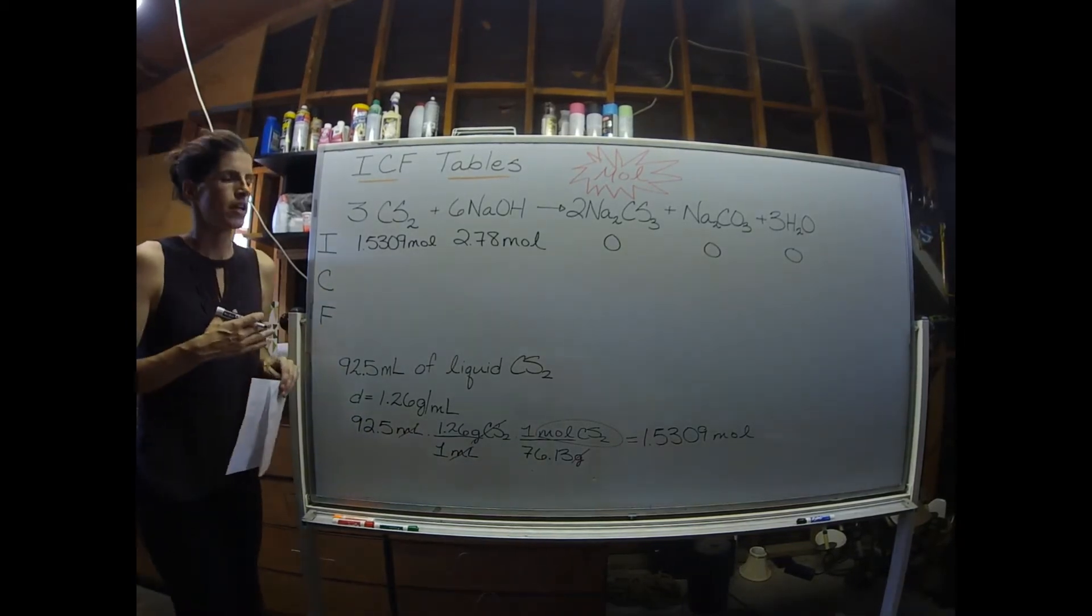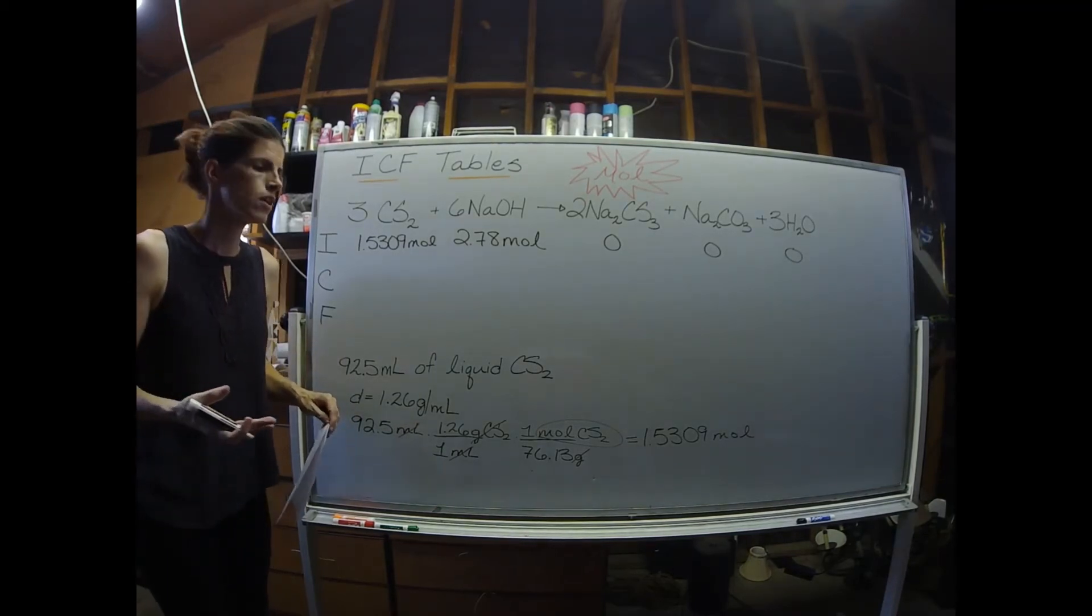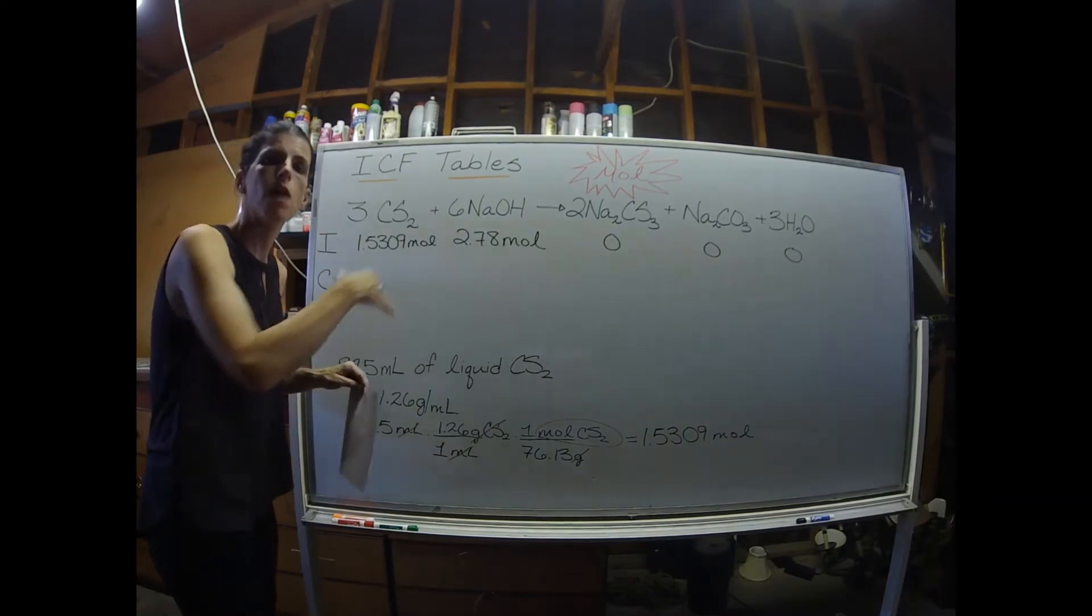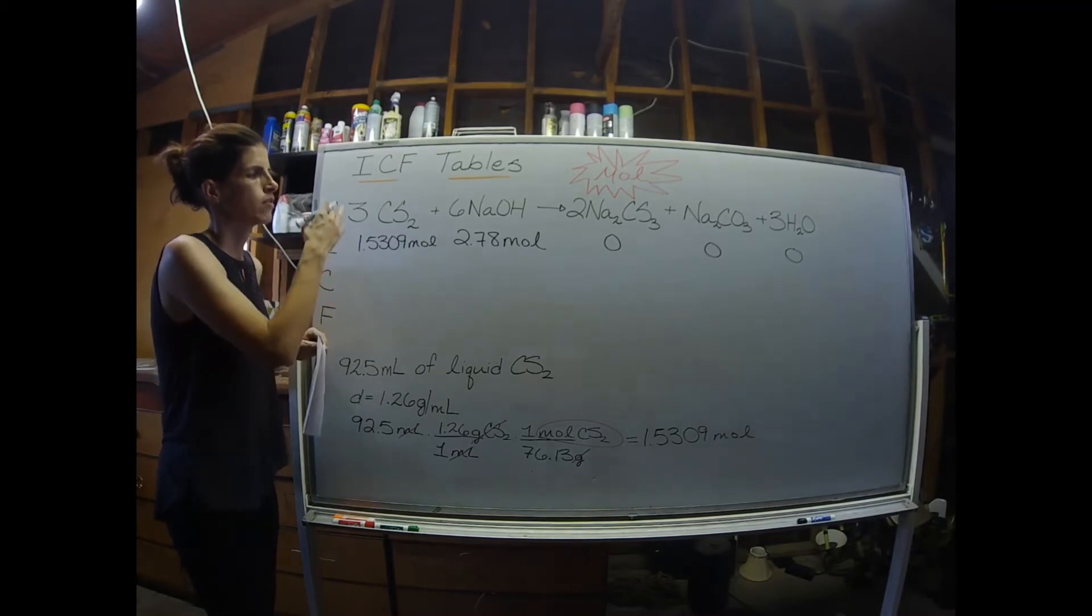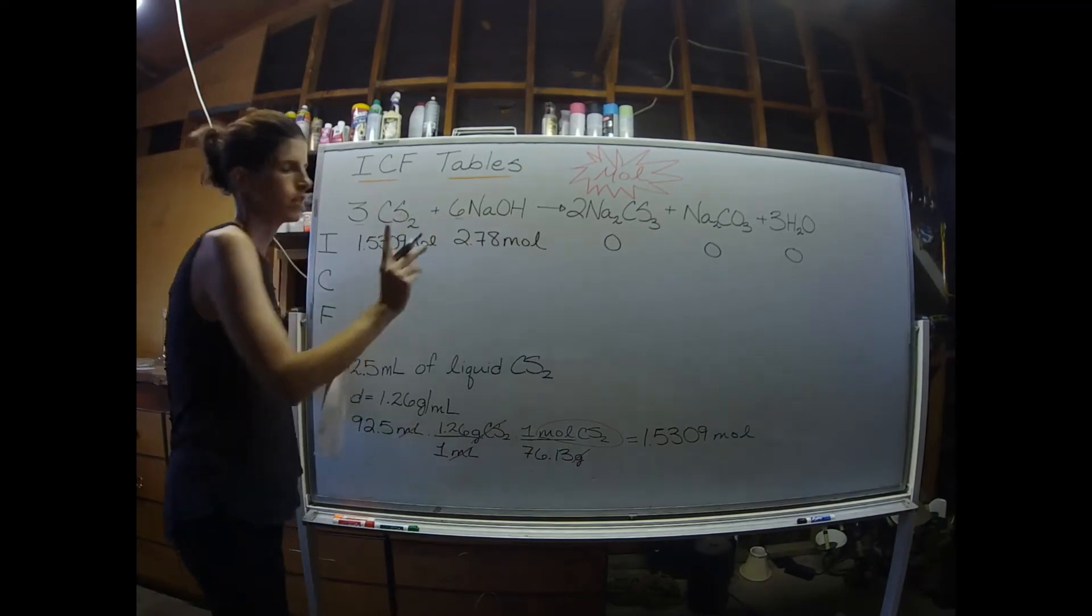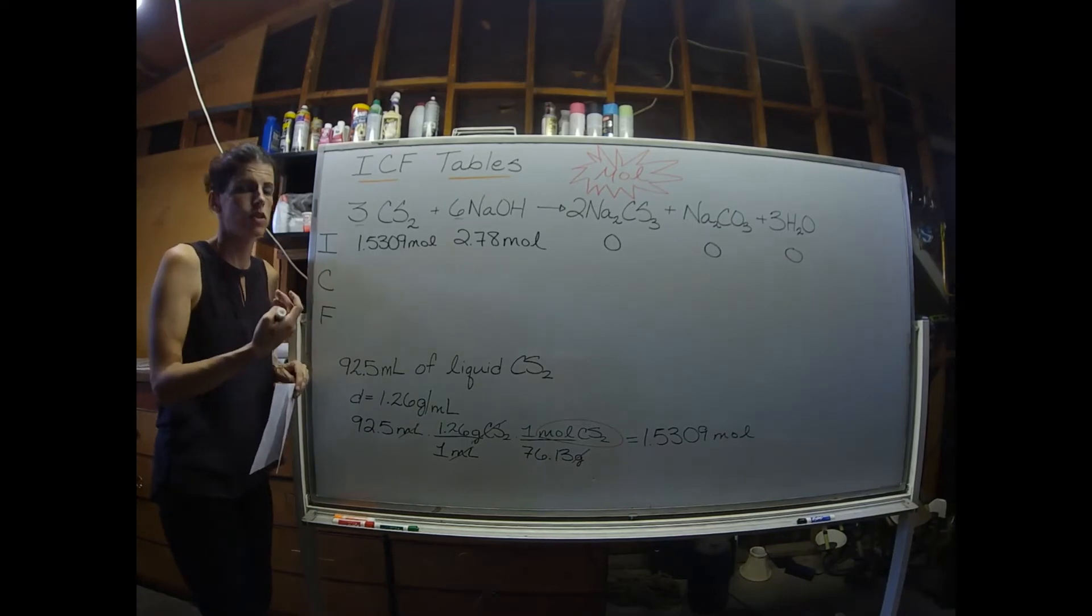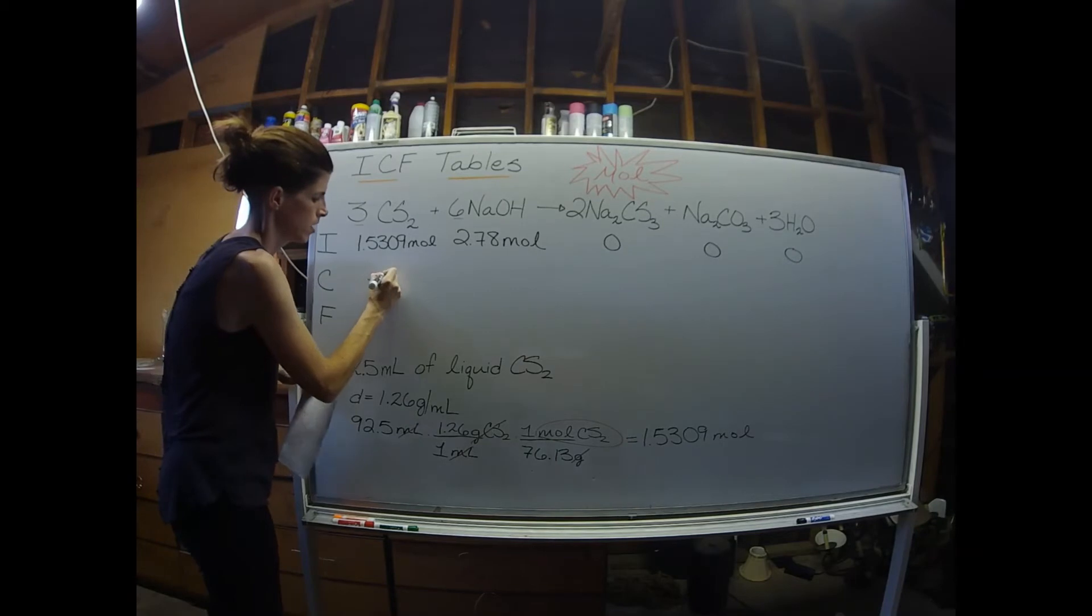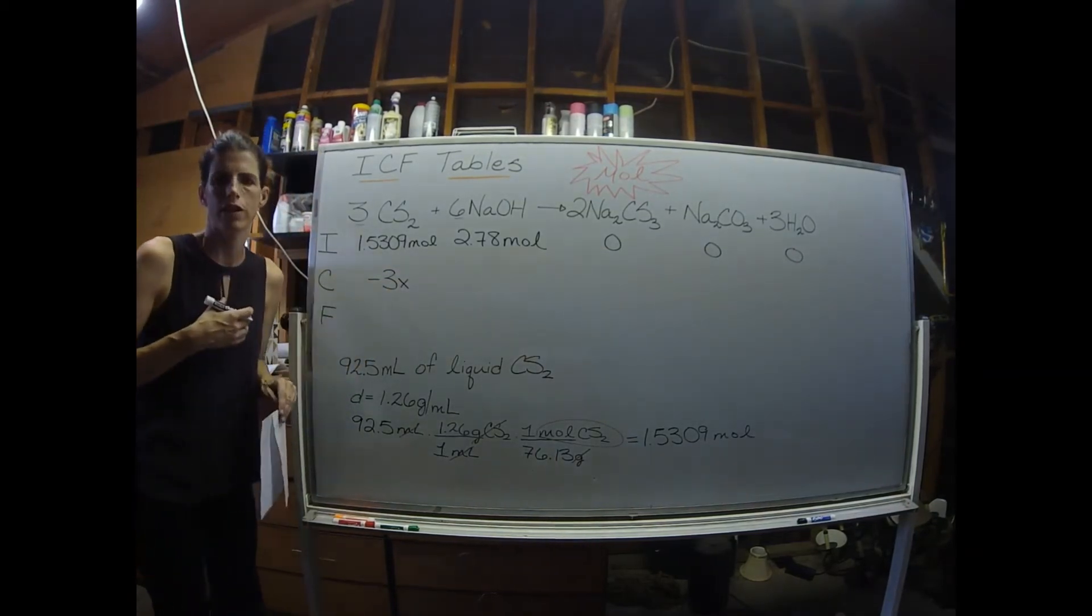The change line. So as you know from working other stoichiometry problems, the amount of reactant that gets used up or the amount of product that gets formed is dictated by the stoichiometry, the coefficients of our balanced equation. So we would expect the carbon disulfide to get used up. And I'm going to grab the three, and I'm going to say it's going to get used up at a ratio of minus 3x. Minus because it's getting used up, the three from the coefficient of the balanced equation, and x because I don't know what that is quite yet.